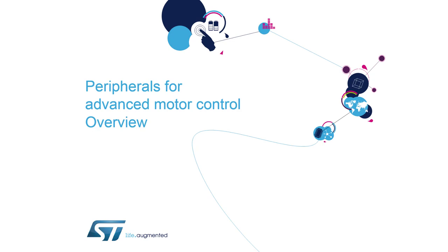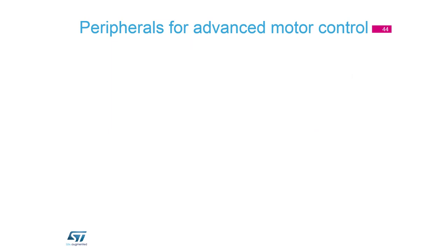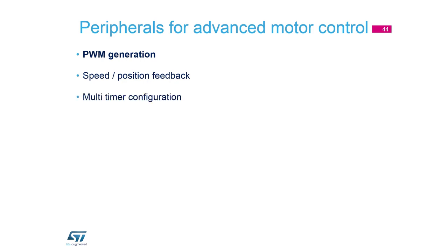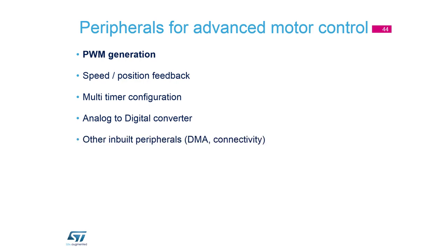We can jump to the peripheries used for motor control. We have PWM generation — for that we use timers. If we have speed or position feedback, we also use timers. There is a part linking IPs together: multi-timer configuration where we react one timer for another and synchronize them. Then there is the analog-to-digital converter, and other peripheries for connectivity or DMA transfers without the core.